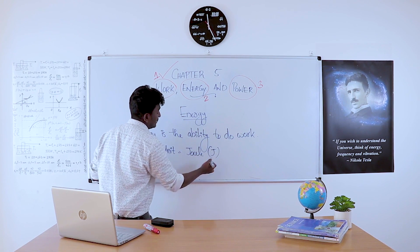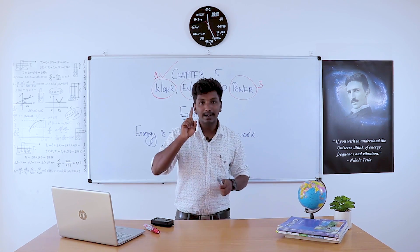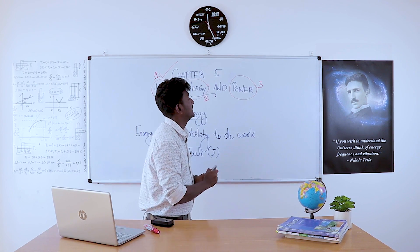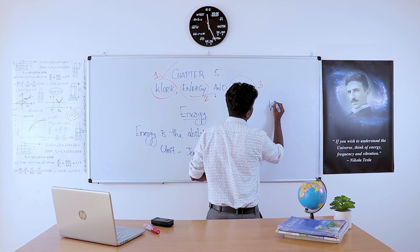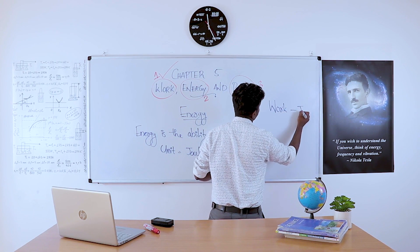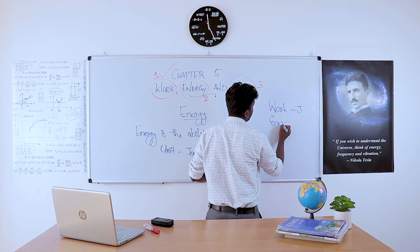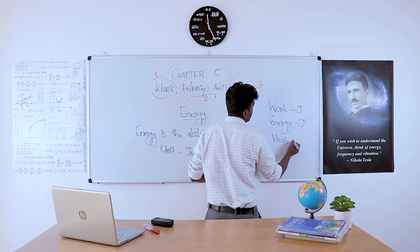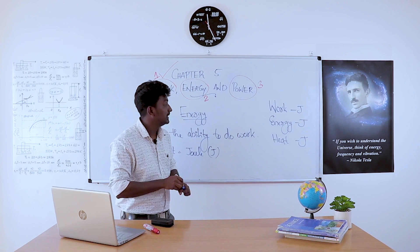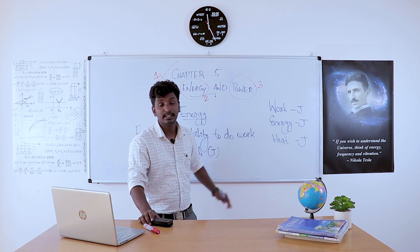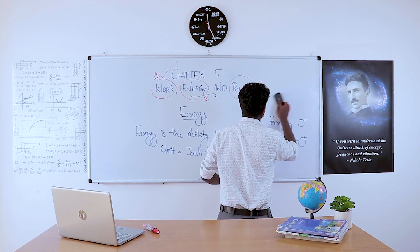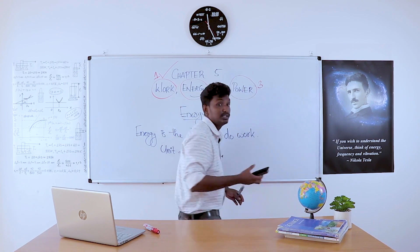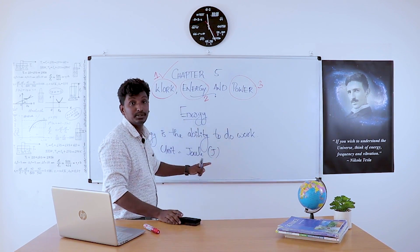Remember one more thing: three quantities share the same SI unit. First, work — unit is Joule. Second, energy — unit is Joule. Third, heat — unit is also Joule. So work, energy, and heat all have the same SI unit, which is Joule. Don't forget these three terms.